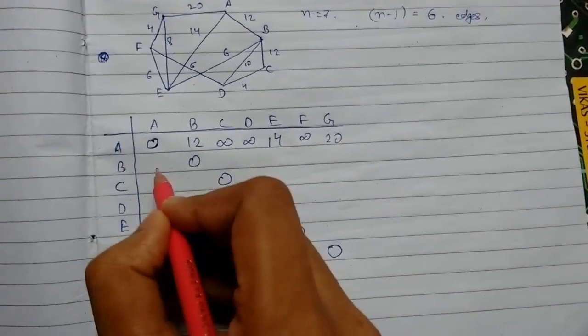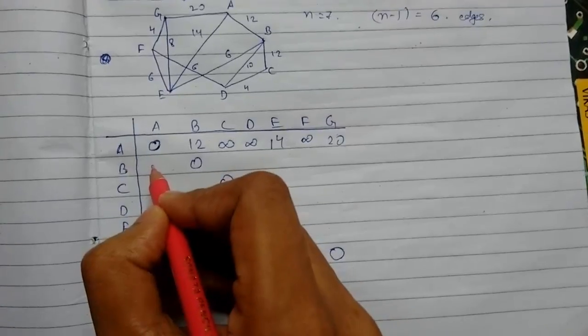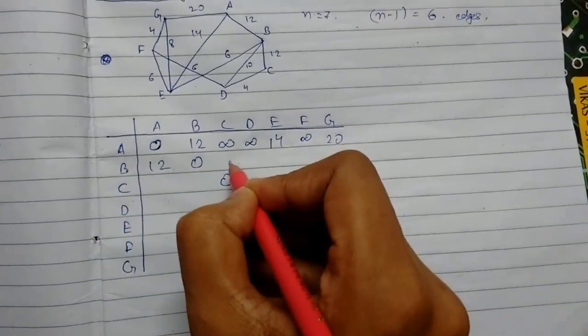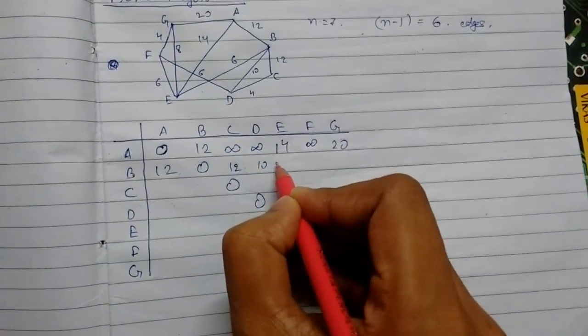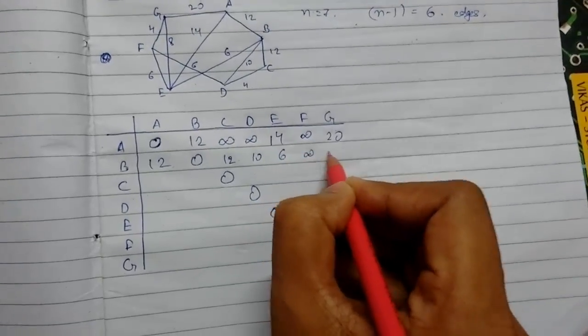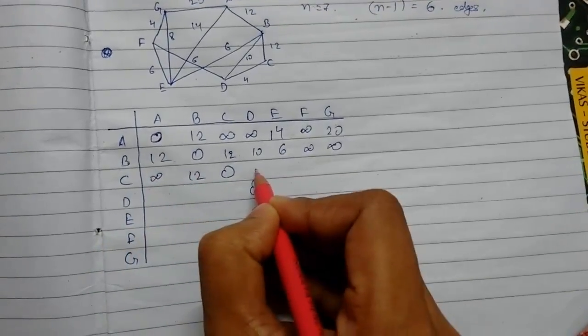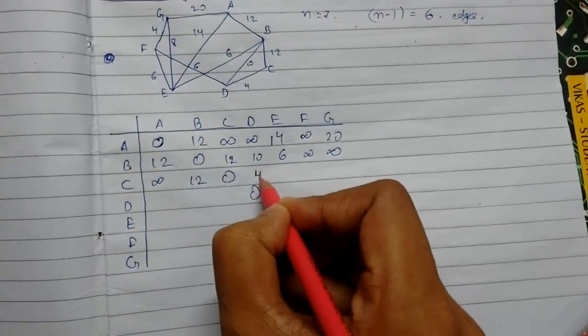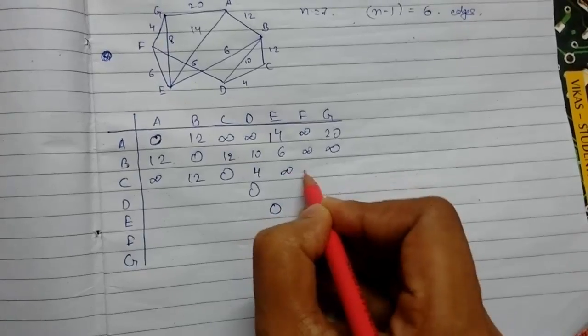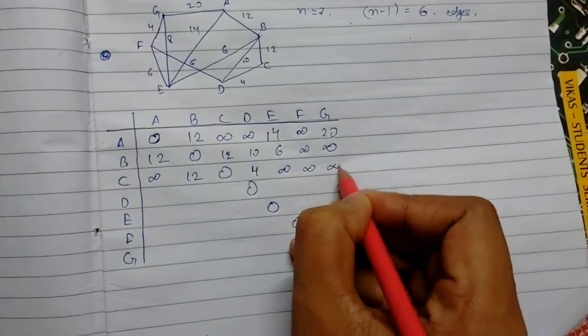Similarly we'll do for all this. So this will be 12, this will be 12, 10, 6, infinity, infinity. This will be infinity, 12, this will be 4, this will be infinity, infinity, and infinity.